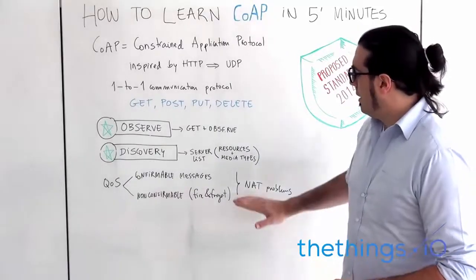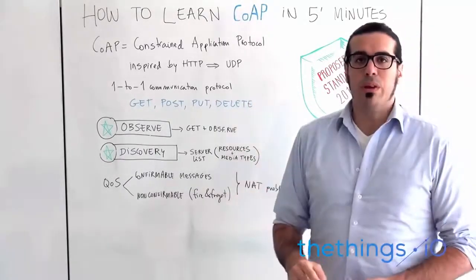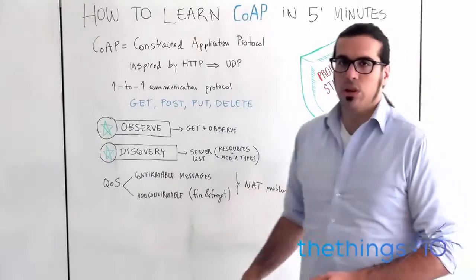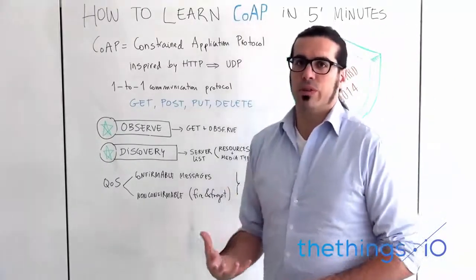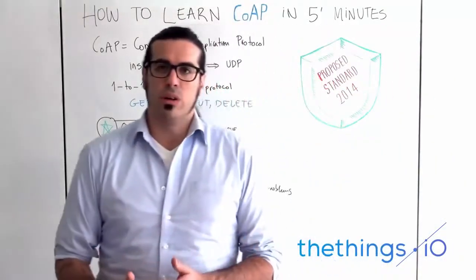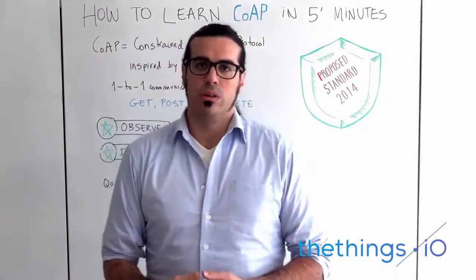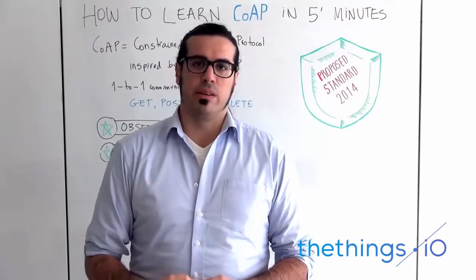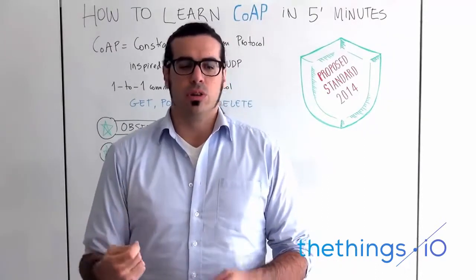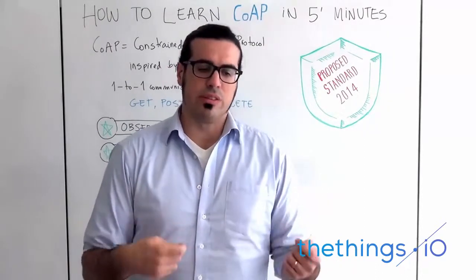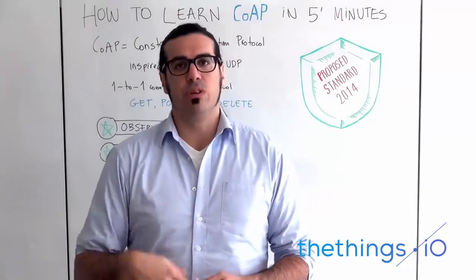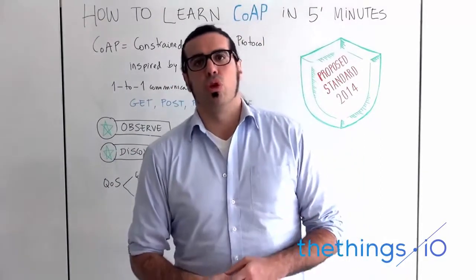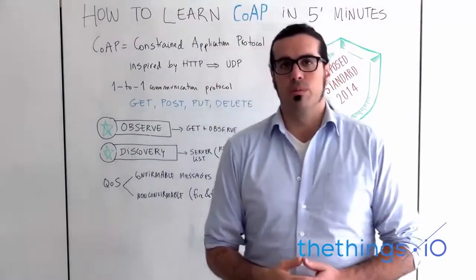That said, because CoAP is over UDP and IP, there are always NAT problems. If your device is behind a router or a firewall, there will always be problems finding the exact IP. So it's important to refresh IPs or use tools to solve those NAT problems.